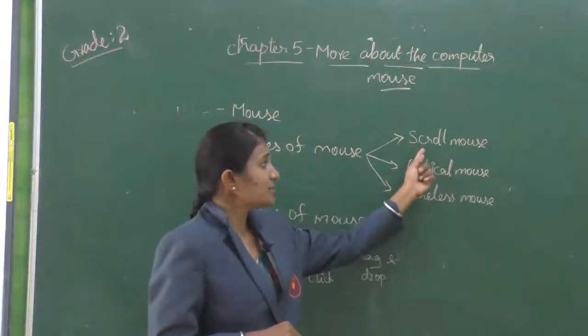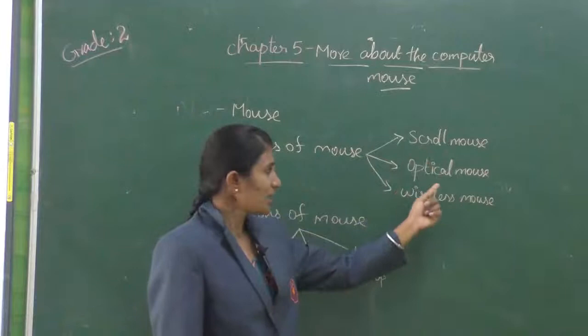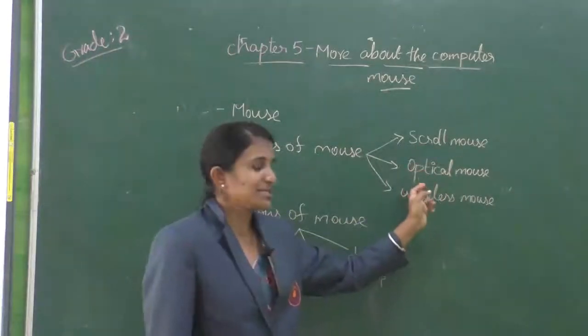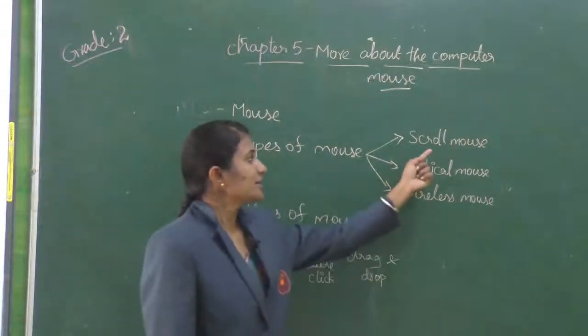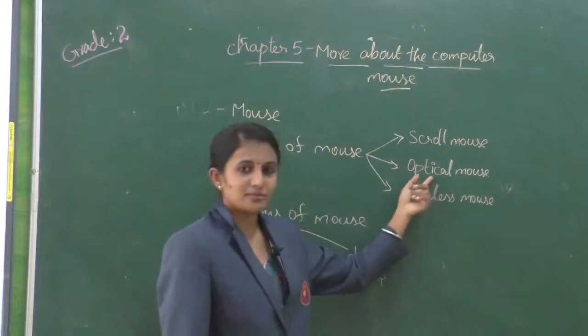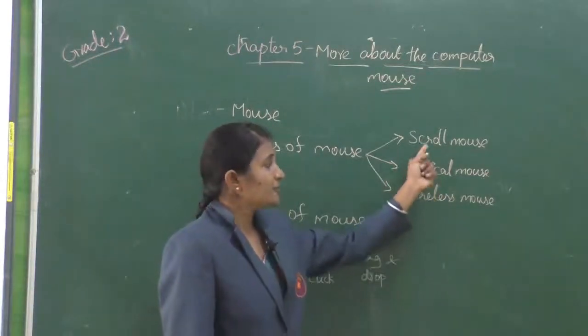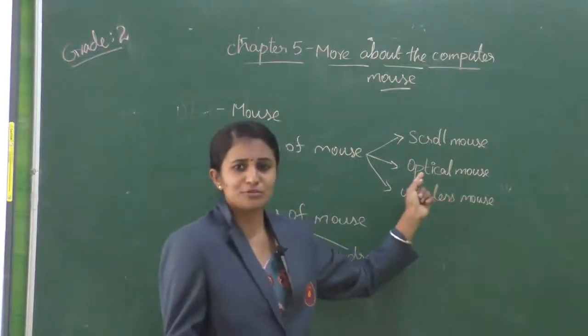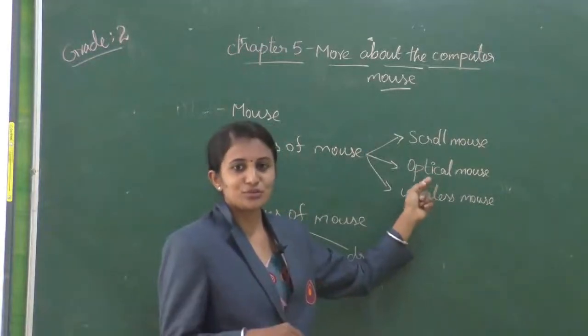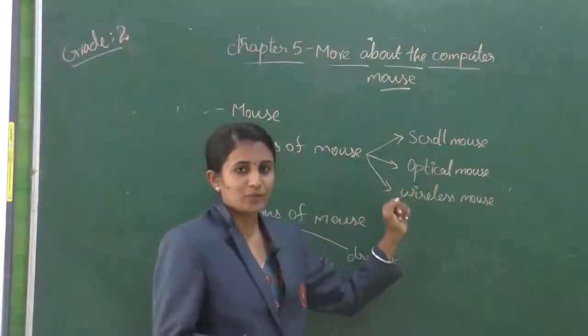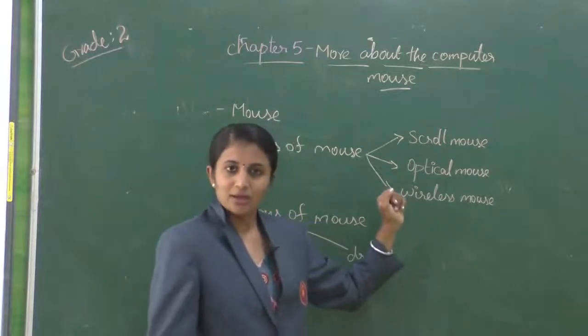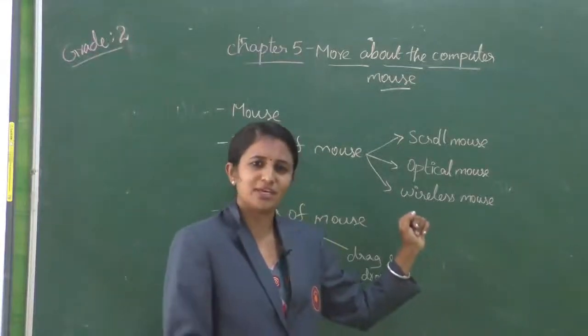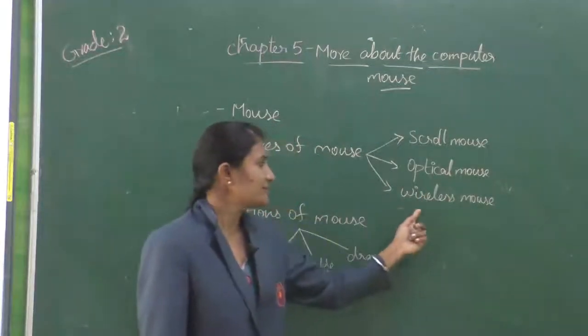Next is optical mouse. This scroll mouse is connected to the CPU, and optical mouse is also similar to scroll mouse. It also indicates red light, but the main thing is it works faster than scroll mouse. We use mouse pad with scroll mouse, whereas in optical mouse no need of using mouse pad. We can use any surface to use this optical mouse. It may be paper or table or any piece of anything. We can use this optical mouse.